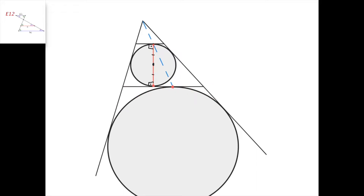And therefore, the tangency point of the incircle with this line would transform into the tangency point of the excircle with this line. So this point and this point are images of each other under this homothety centered at this point, which means that these three points must lie on the same line. If we scale the whole picture with respect to this center and this point goes to this point, then of course the three points are collinear.